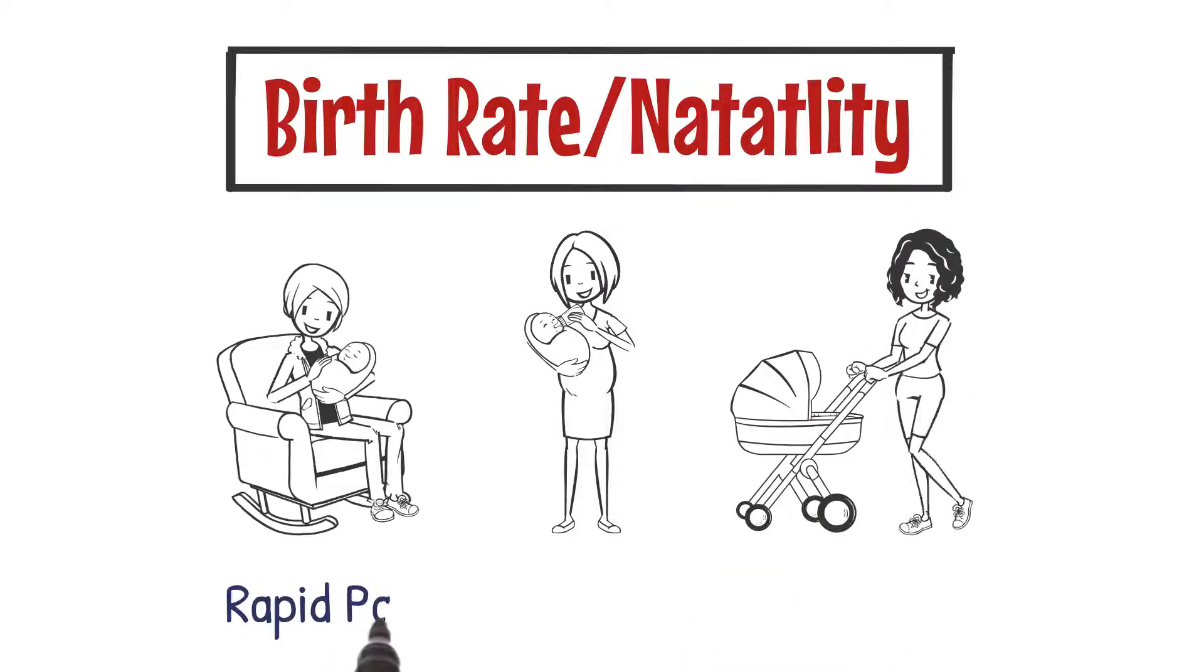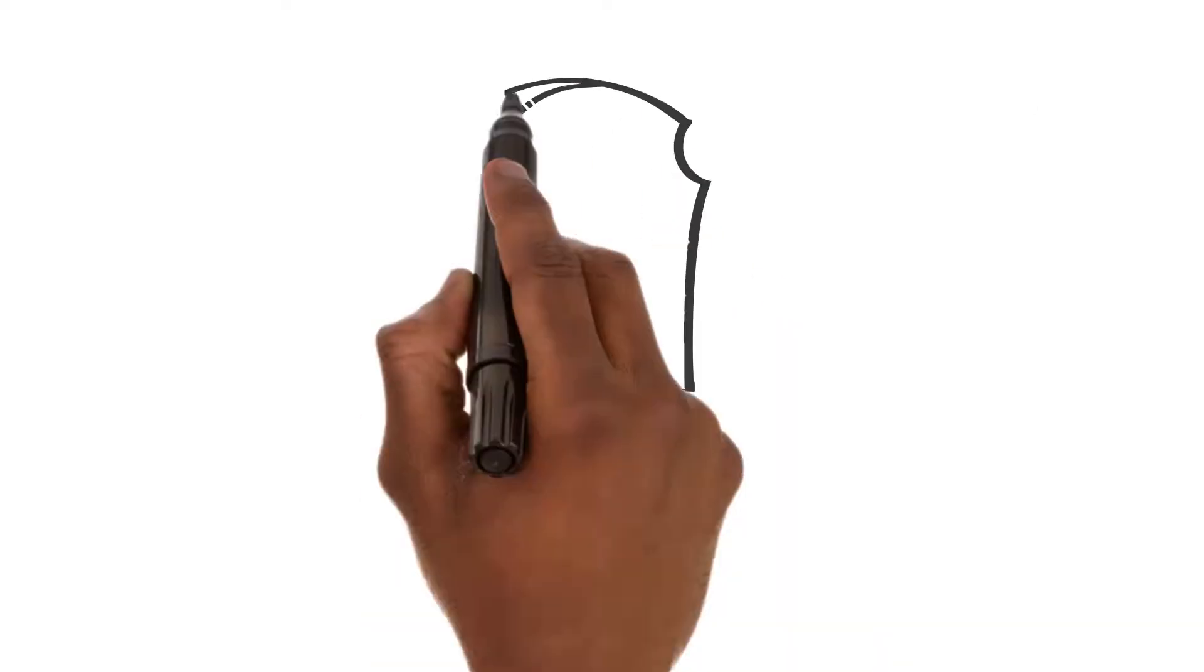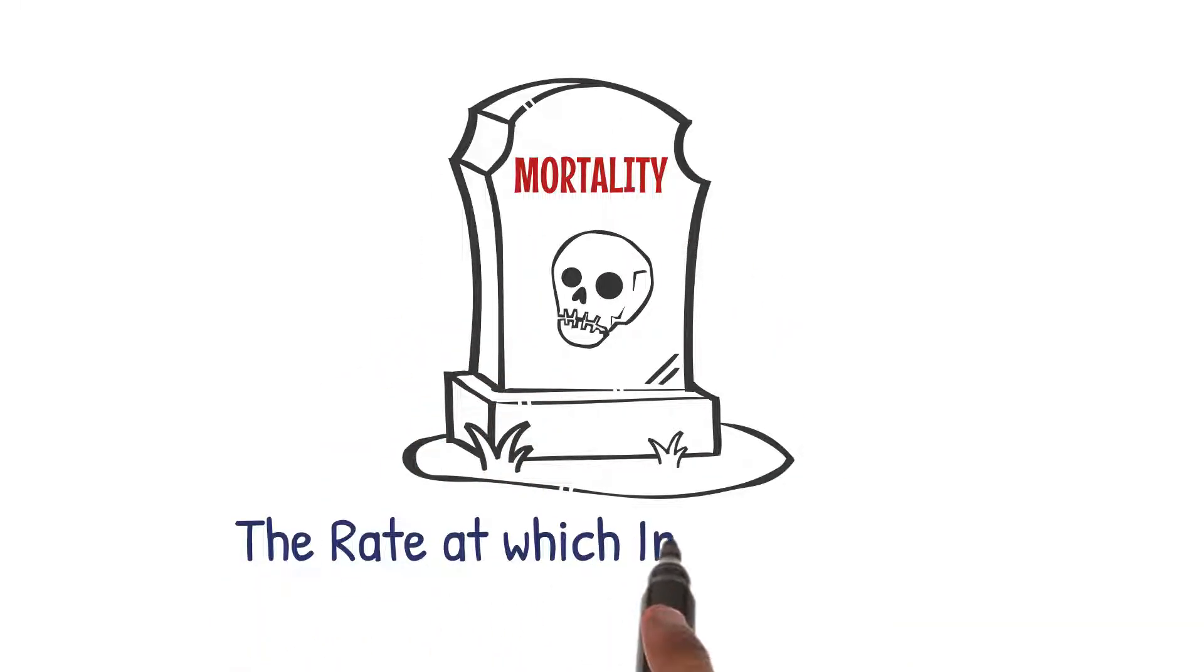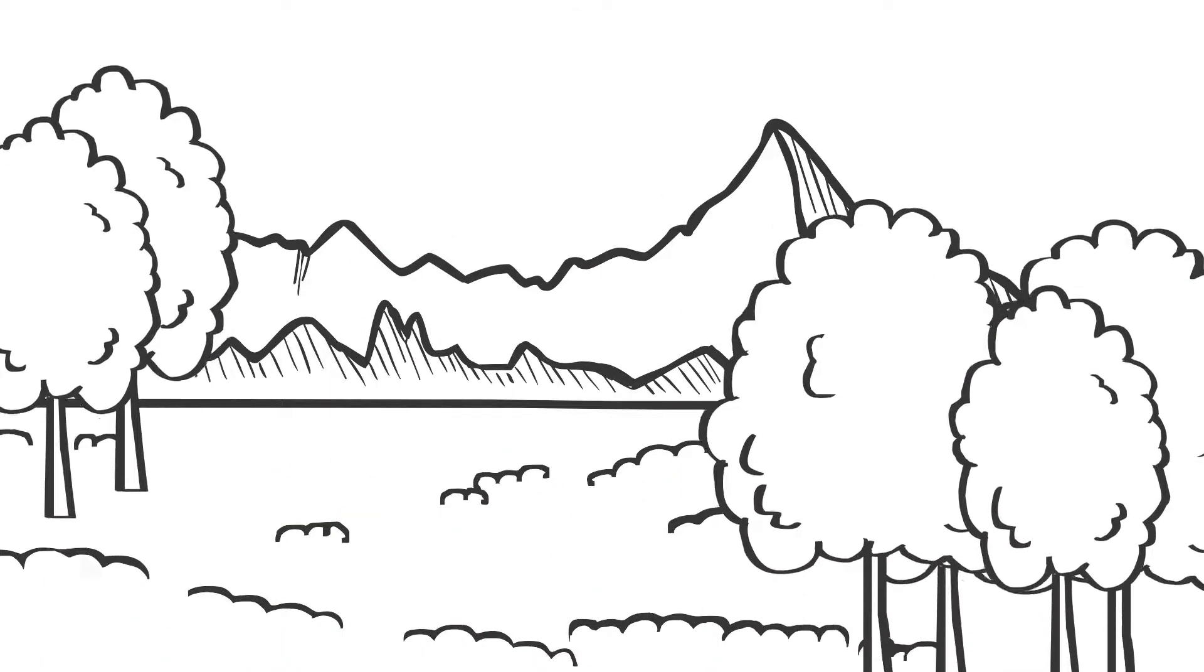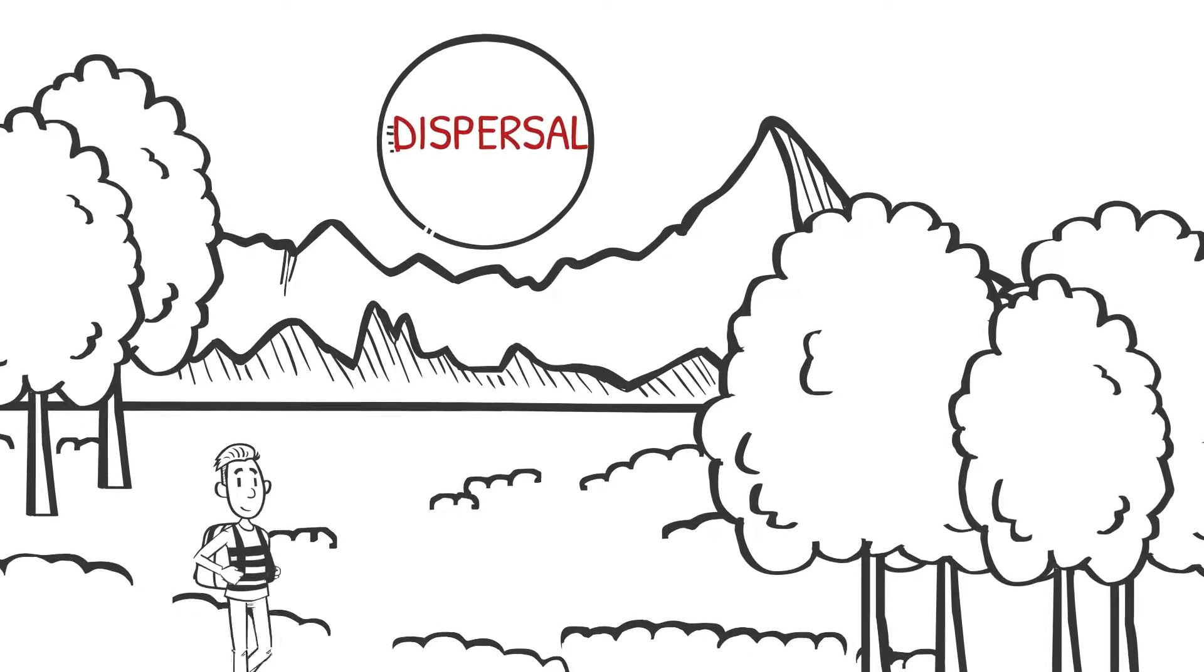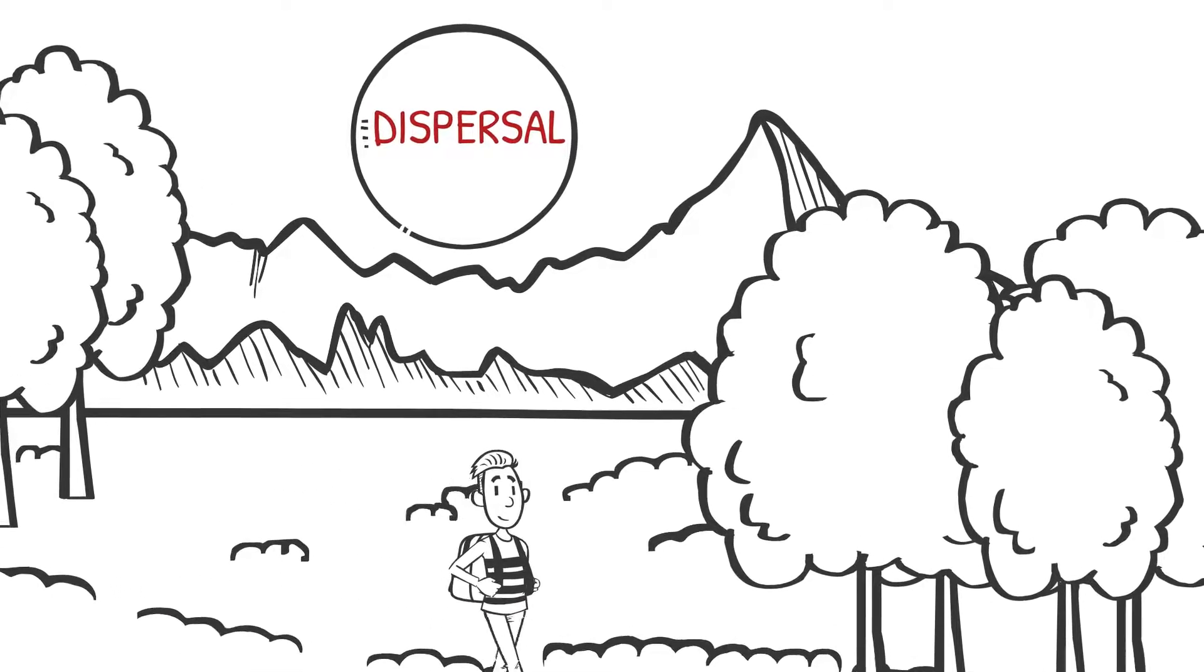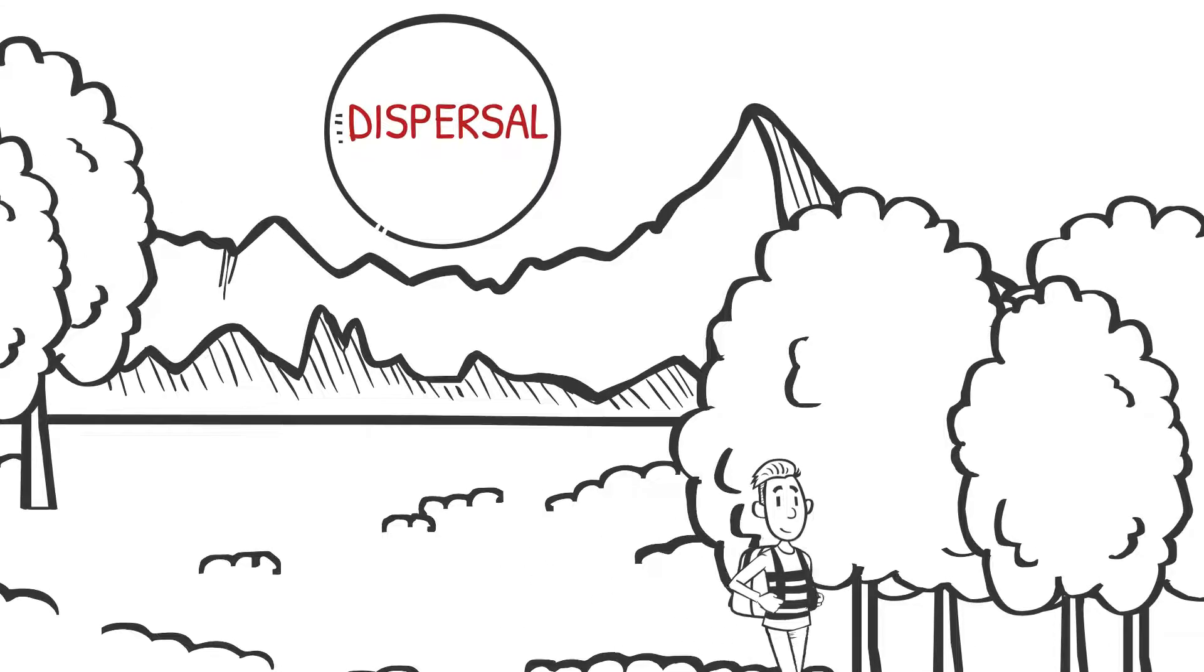On the other hand, we also experience mortality, which refers to the rate at which individuals die. Humans, being a highly mobile species, are quite skilled at dispersal—we can move from one place to another, exploring new territories and settling in different parts of the world.